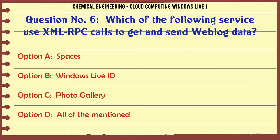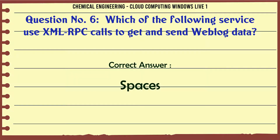Which of the following services uses XMLRPC calls to get and send weblog data? A. Spaces. B. Windows Live. C. Photo Gallery. D. All of the mentioned. The correct answer is Spaces.